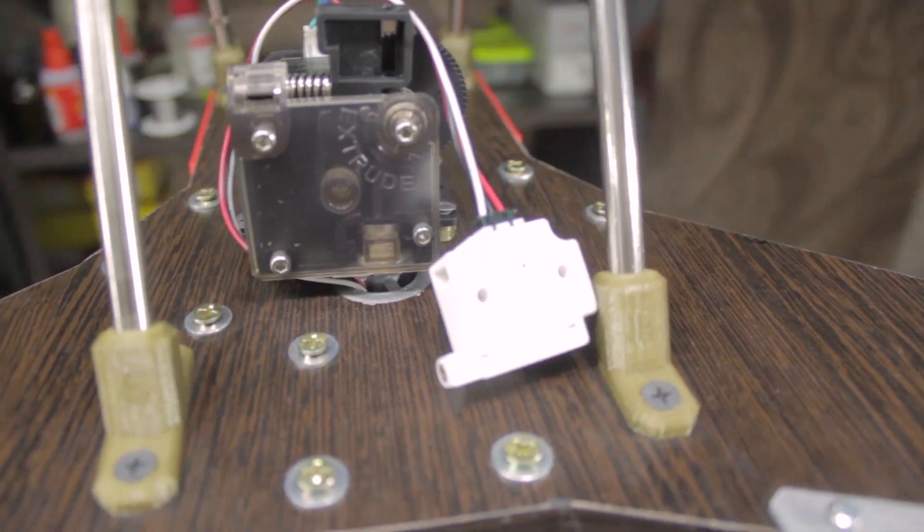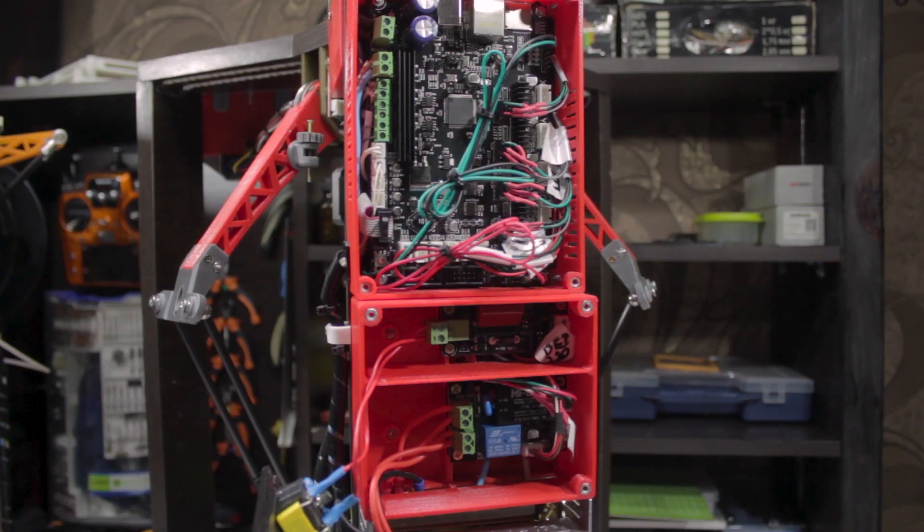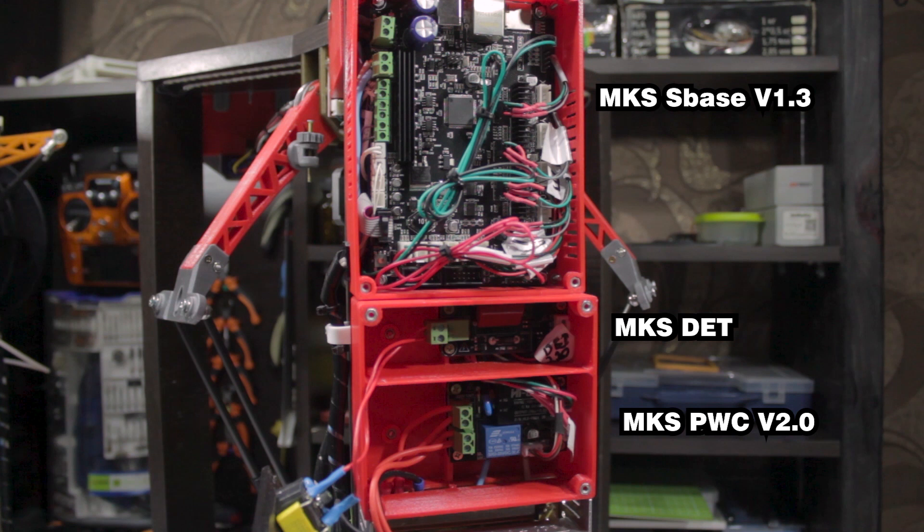Here is the same control board plus additional modules from MakerBase. This is a 3.2-inch touchscreen display, a Wi-Fi module, a filament sensor, a printer power failure detector, and automatic shutdown module when printing is completed. This is surely not an advertisement. There are simply no other similar integrated and relatively inexpensive solutions.